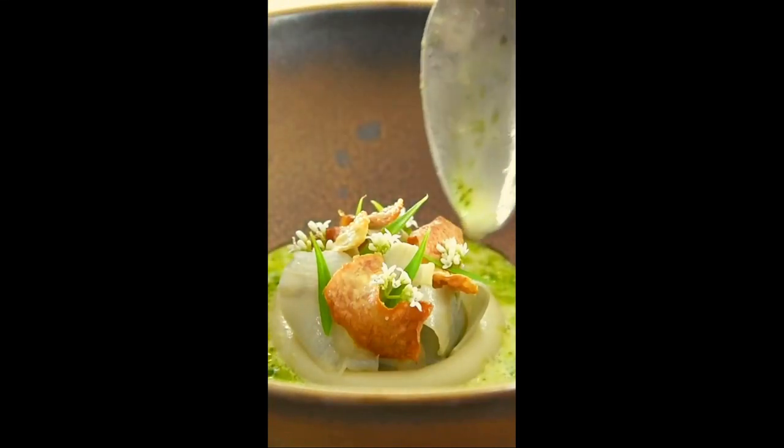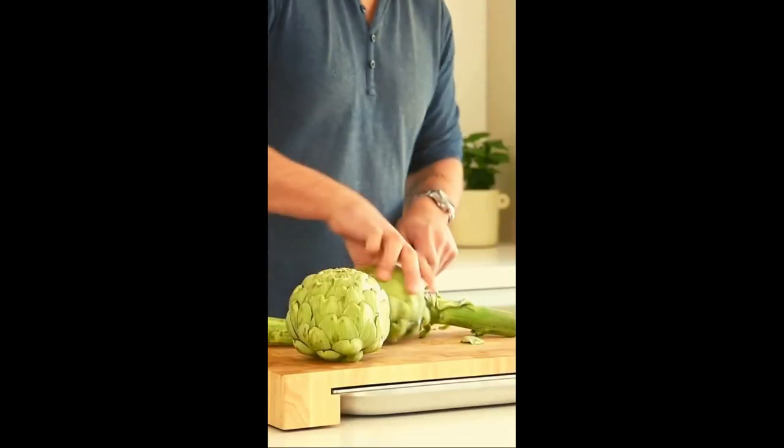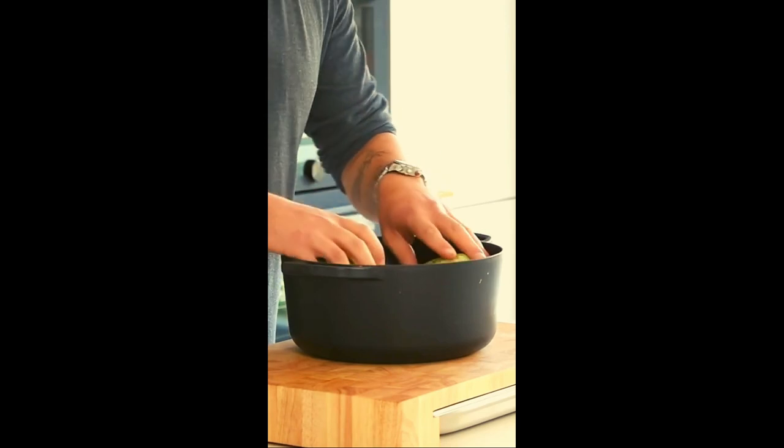Let's make a delicious artichoke dish. First take your artichokes and remove the stem. Transfer them into a big pot and cover completely with water.